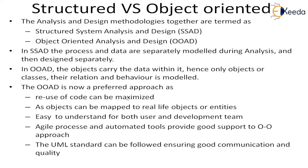OOAD is now the preferred approach because it provides a lot of opportunity for code reuse. Once the code is reused, time can be reduced and tested code is used, so its quality will be higher. As objects can be mapped to real-life objects or entities, it will be easy to understand for both users and the development team. Agile processes and automated tools provide good support to the OO approach, and the UML standard can be followed, which ensures a proper communication standard way of depicting things.